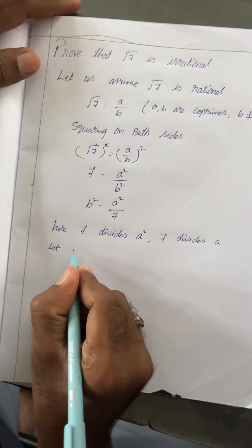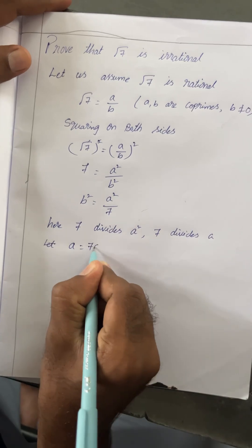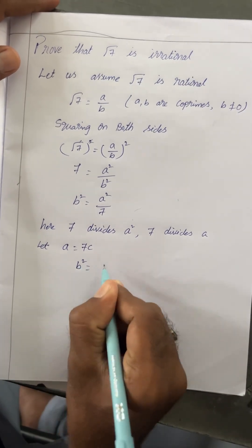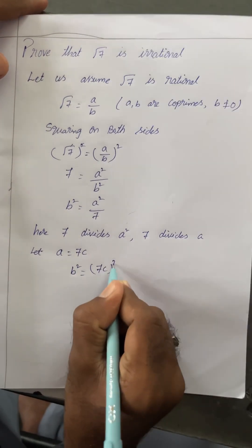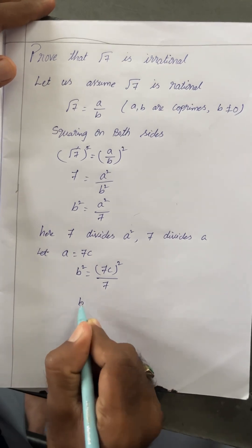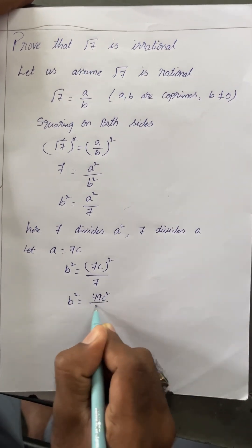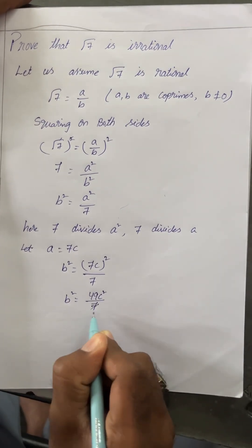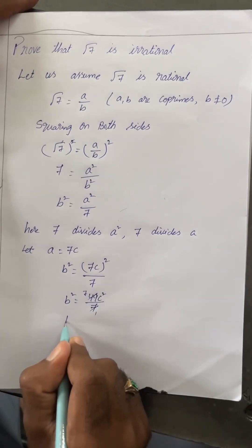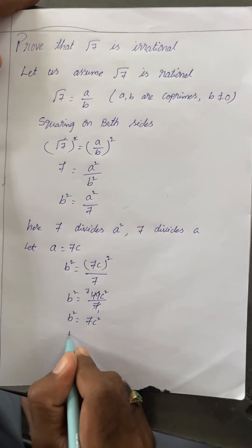Now, let us assume a constant a is equal to 7c. Then b square is equal to 7c whole square by 7, which gives b square is equal to 49c square by 7. The 7s get cancelled, so b square is equal to 7c square.